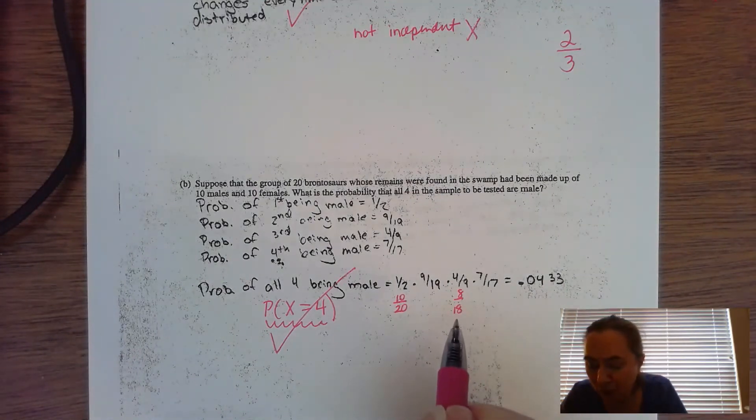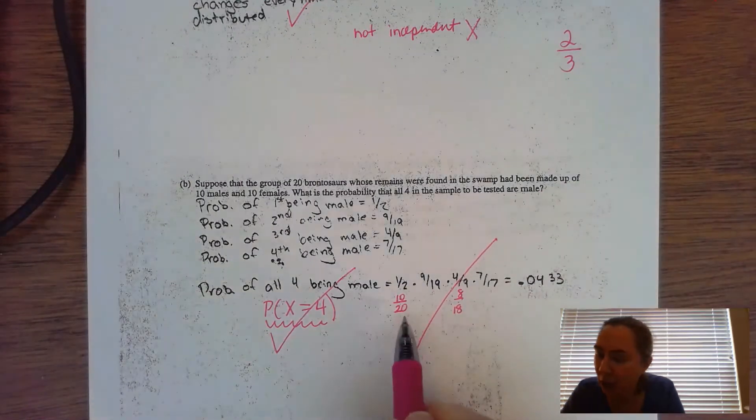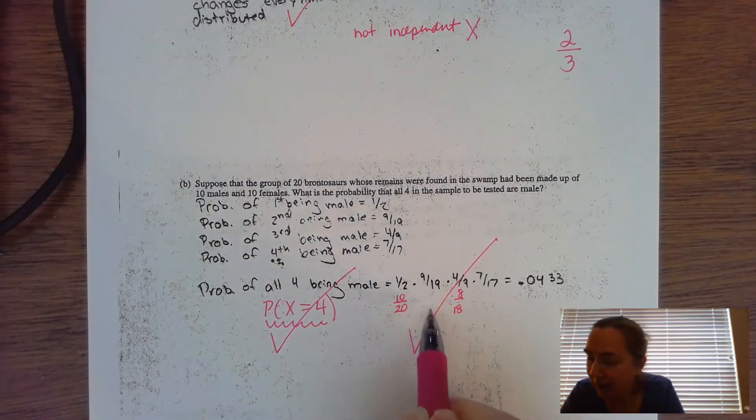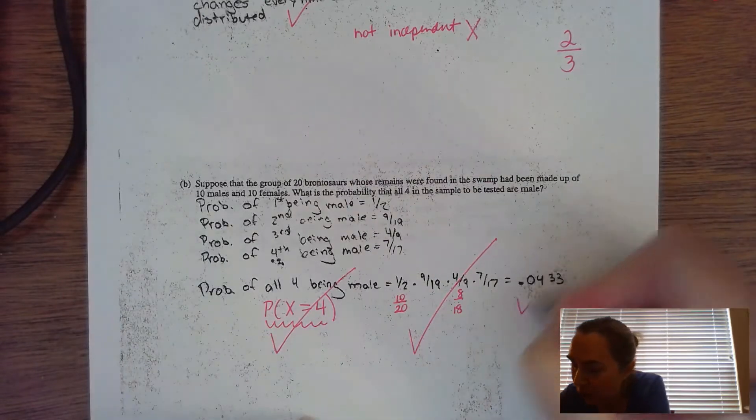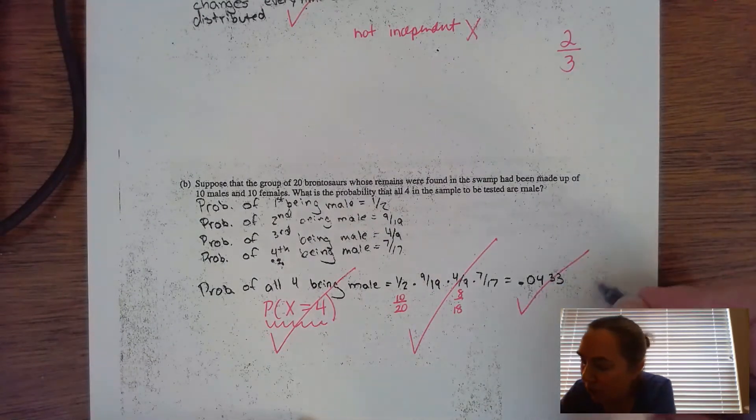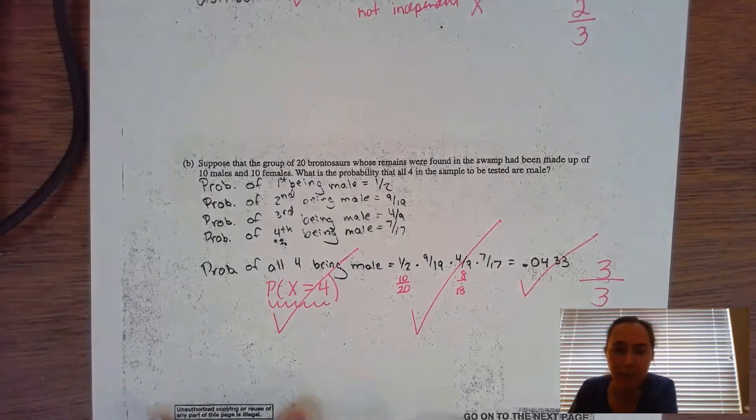You do not have to reduce these fractions. If you have that work, you're going to get the work point, but you have to show 10 out of 20, nine out of 19, eight out of 18, seven over 17. You got to show work for that. You can reduce them if you want. And then the final answer is 0.043. Check. So this one is also worth three points. My person got all three points for this particular problem.